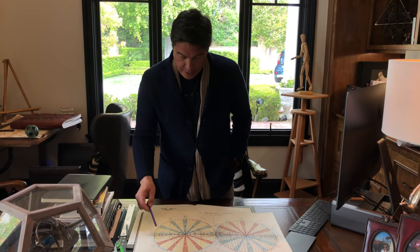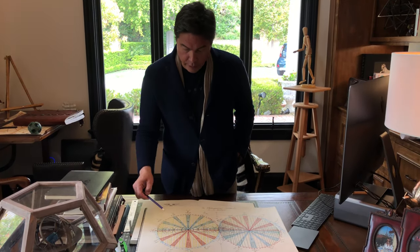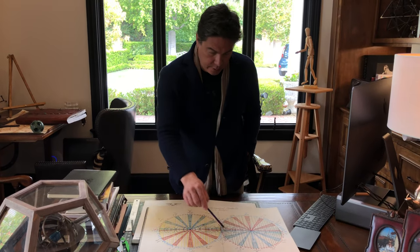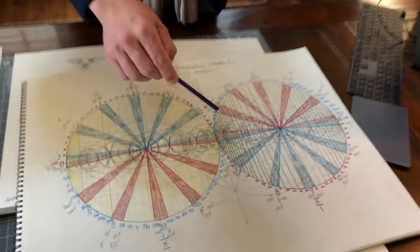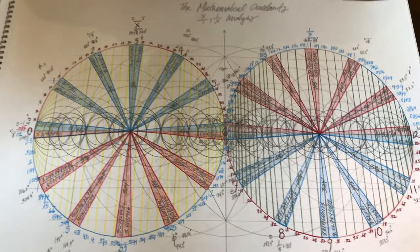So this is the math constants in 1 over x symmetry. It's a sine and cosine wave. The red numbers are the sine and the blue numbers are the cosine wave.